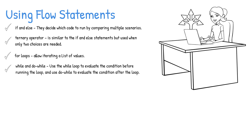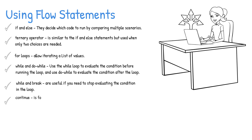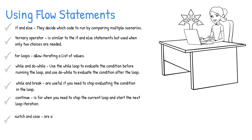While and do-while are a common pair. Use the while loop to evaluate the condition before running the loop, and use the do-while to evaluate the condition after the loop. Break is useful if you need to stop evaluating the condition in the loop. Continue is for when you need to stop the current loop and start the next loop iteration. Switch-case are alternatives to if and else statements but require a default clause.